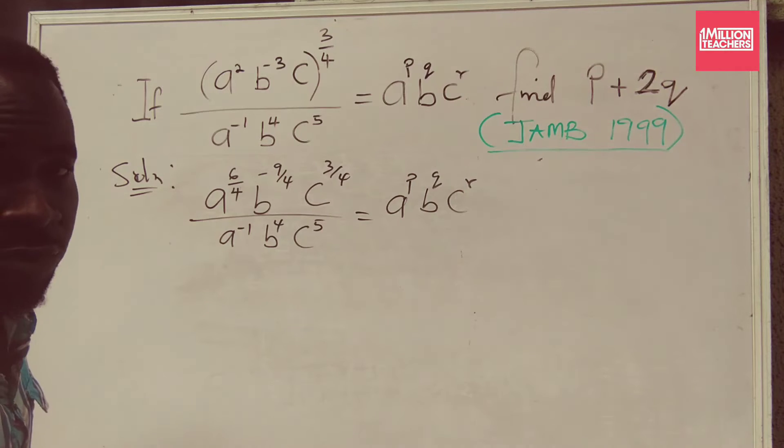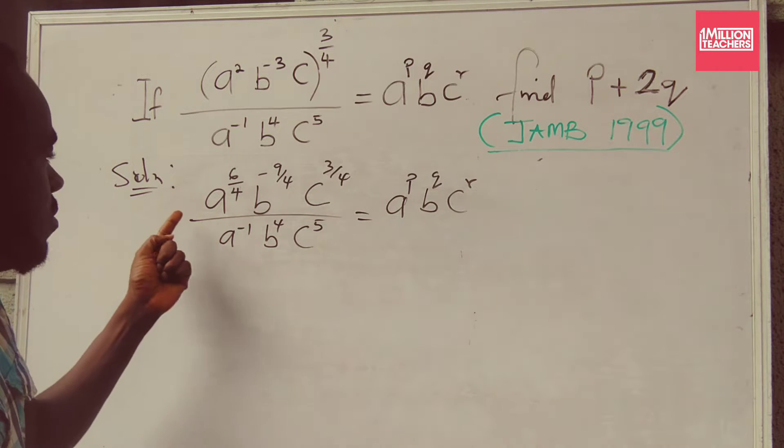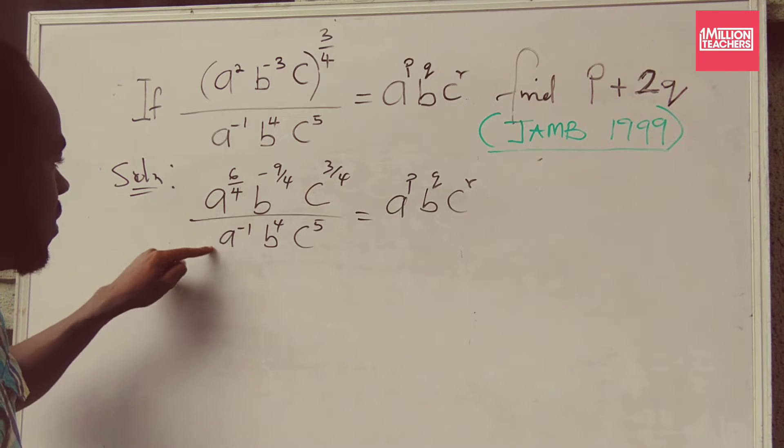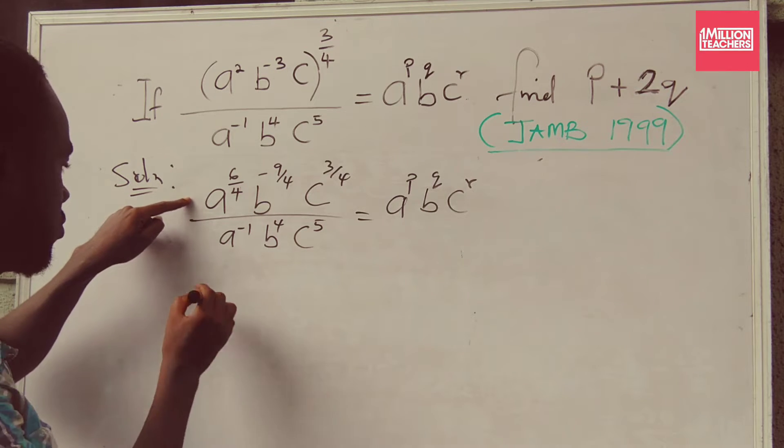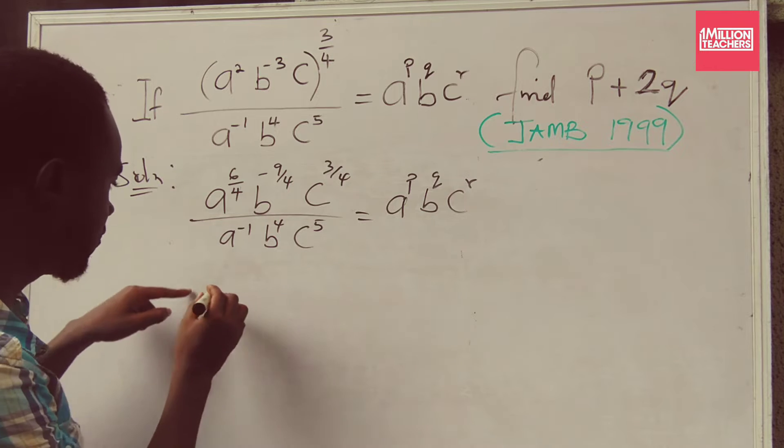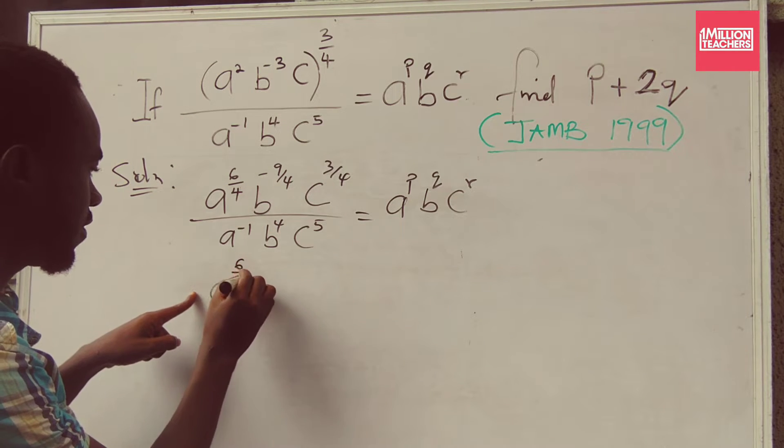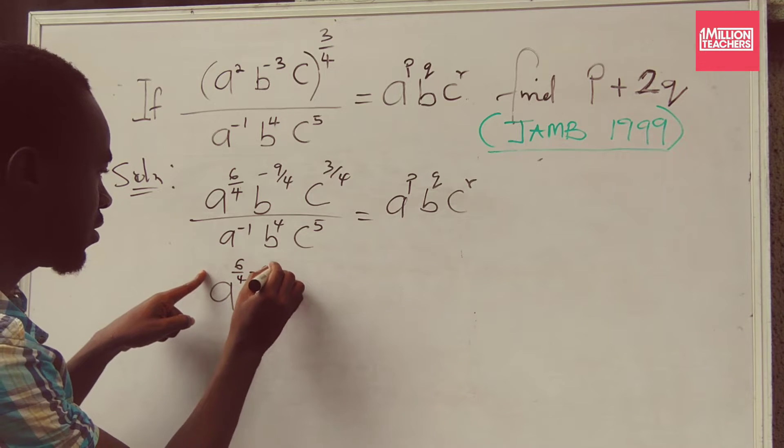I want to apply the power law. Next, I'm going to apply the division law because of this over sign. This, they have the same base. This A, this A. So apply the division law. This will give me A to the power of 6 over 4 minus 1.